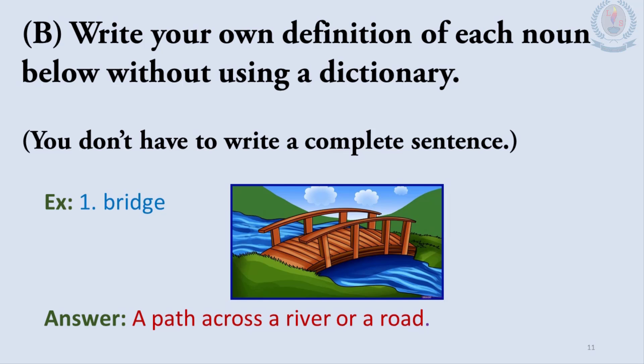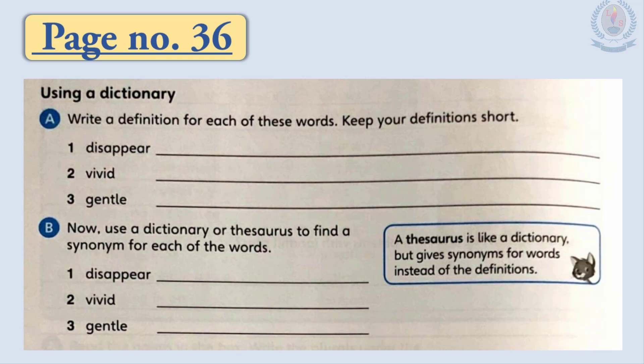Part B: Write your own definition of each noun below without using a dictionary. You don't have to write a complete sentence. For example, the first word is 'bridge' — it is a path across a river or a road. Now turn to page number 36 in your workbook. Here you are given two activities: Part A — write a definition for each of these words, keeping your definitions short. Part B — use a dictionary or thesaurus to find a synonym for each of the words.